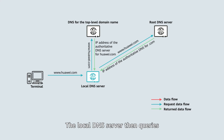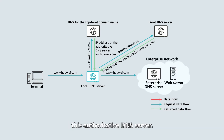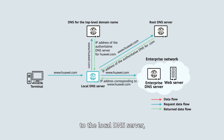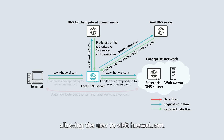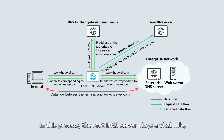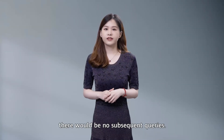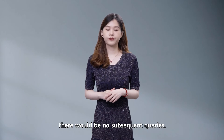The local DNS server then queries this authoritative DNS server. Because this DNS server is the right server, it provides the IP address of Huawei's website to the local DNS server, allowing the user to visit huawei.com. In this process, the root DNS server plays a vital role, as without it, there would be no subsequent queries.